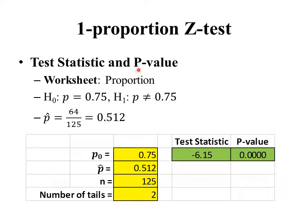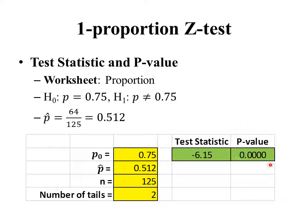To calculate the test statistic and the p-value, we use the worksheet called 'proportion' in the Chapter 7 workbook. We enter the information into the yellow cells: p-naught is the number in the null hypothesis, 0.75; p-hat is our sample proportion; n is our sample size; and the number of tails is 2 because we have a not-equal-to sign in our alternative hypothesis. The p-value is calculated a little differently than in Part A, but its interpretation is the same — it's the probability of getting a sample proportion at least this extreme, assuming the null hypothesis is true.